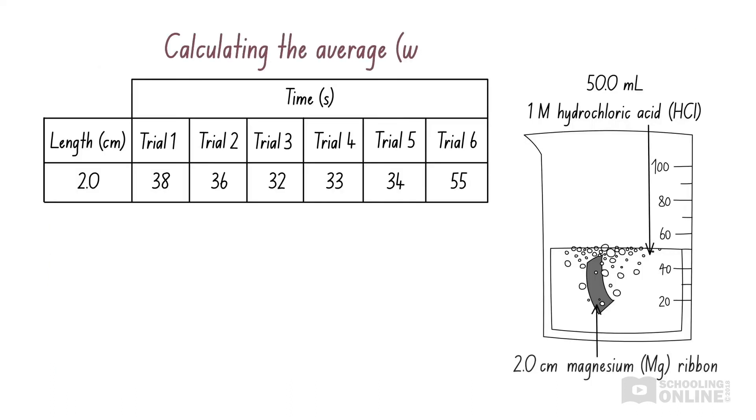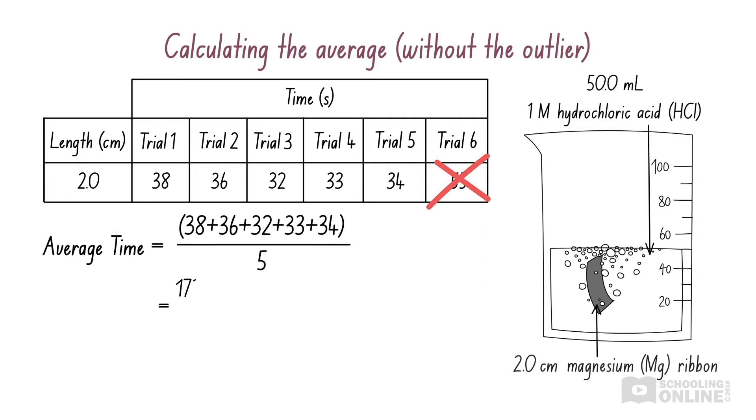Let's see how this applies to the experiment where we measured the time taken for magnesium to react with hydrochloric acid. Firstly, we need to remove any outliers. Then, we find the sum of all the measurements, and divide by the total number of measurements, which is five. Finally, we round the average to the correct number of significant figures. Each time is given to two significant figures, so we round the average to two significant figures. This gives us 35 seconds, which is a reasonable answer.